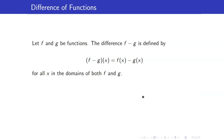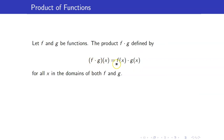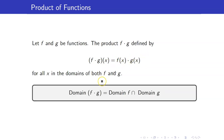Similarly, we can define the difference of the functions. In this case, we just get the difference of the images under f and g. The domain is also the intersection of the two domains because f of x has to be a real number and g of x has to be a real number. The product f times g of x is defined as the product of the images under f and g. Again, the domain of the product f·g is just the intersection of the two domains.